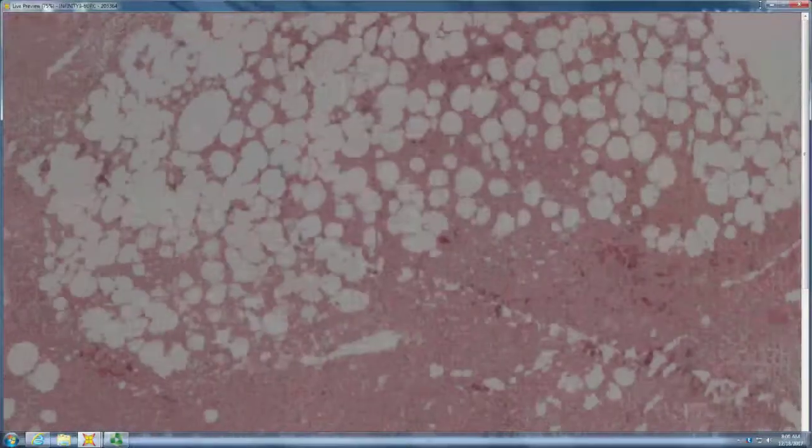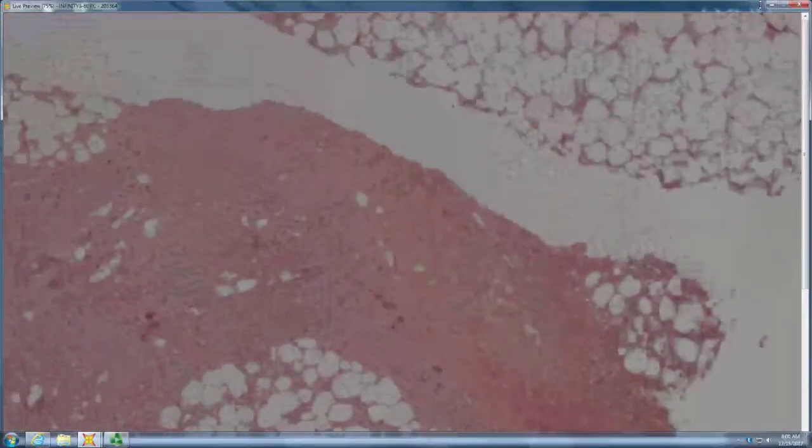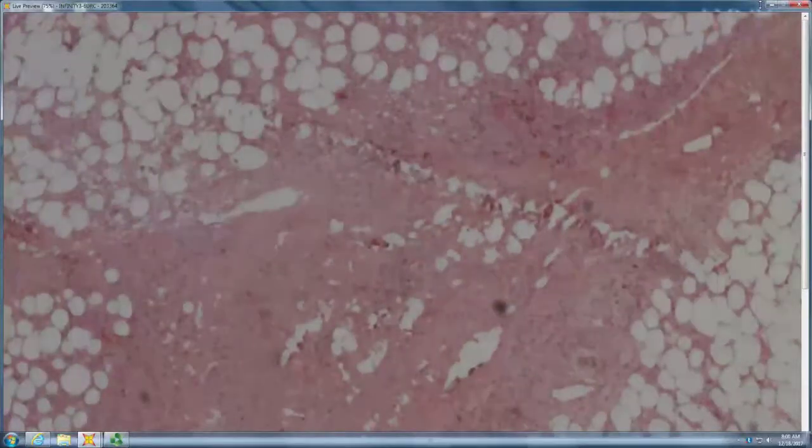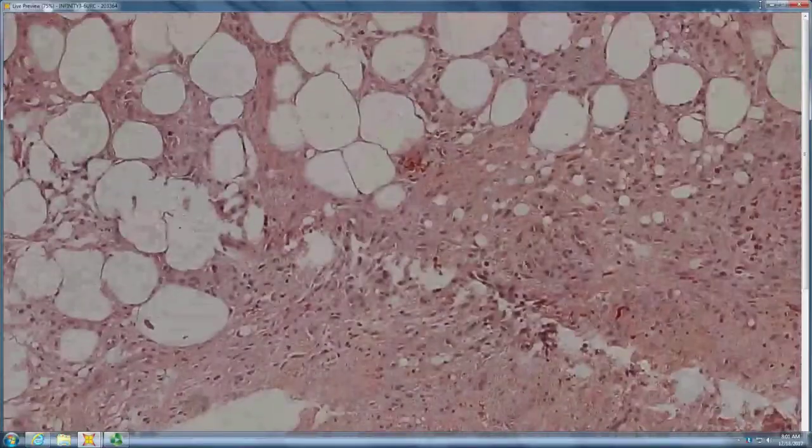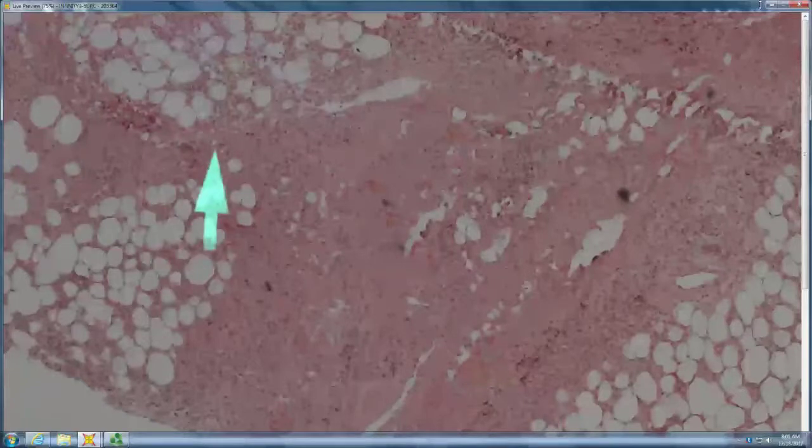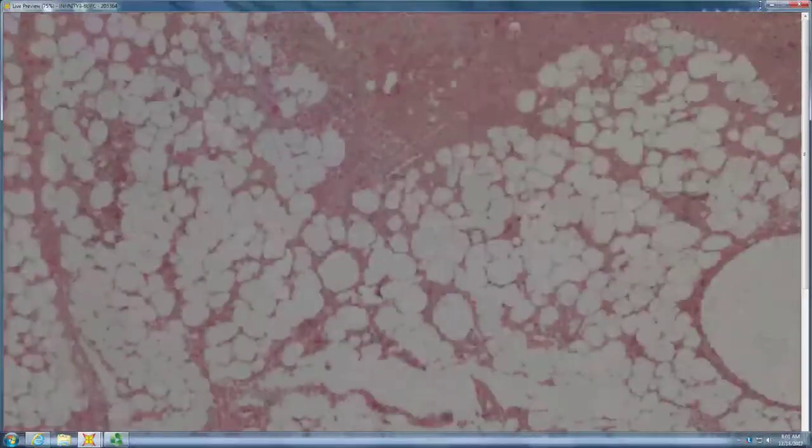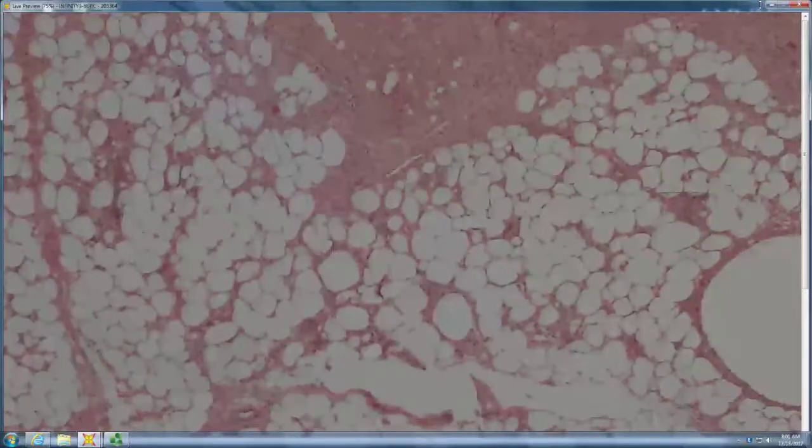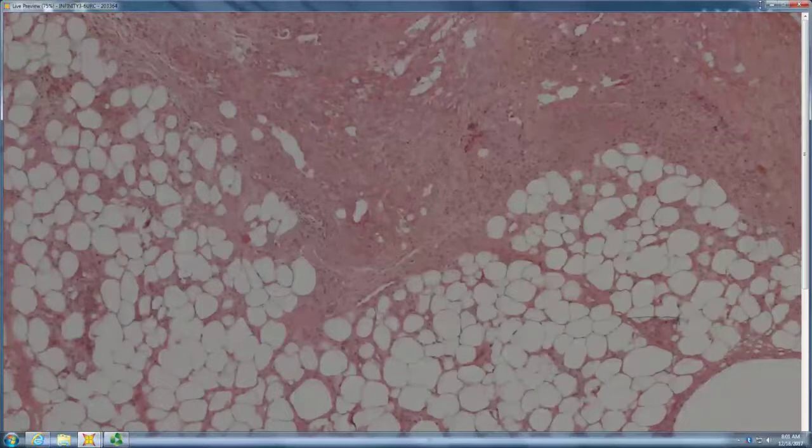It looks like predominantly lobular. Maybe some lipomembranous change maybe in the center. Let's just look to see if there's lipomembranous there. So a little bit of lipomembranous change here. That septum is pretty wide. Clinically it was erythema nodosum. There is a little bit of lobular necrosis here. So what do you do when it looks like erythema nodosum, but there's some lobular necrosis. You look for things on both sides. You look for all causes of septal as well as causes of lobular panniculitis.